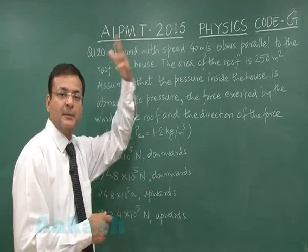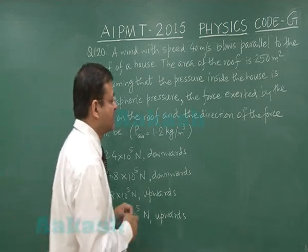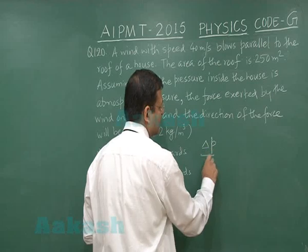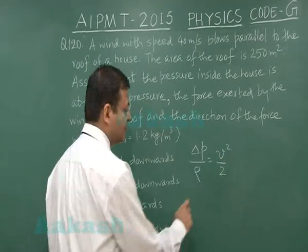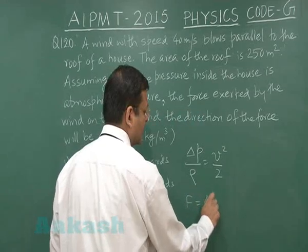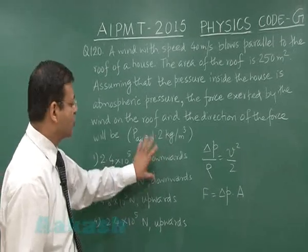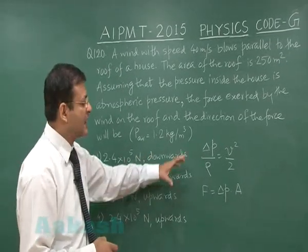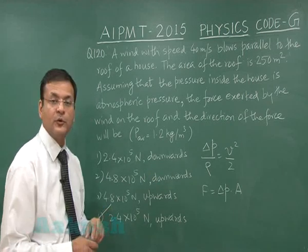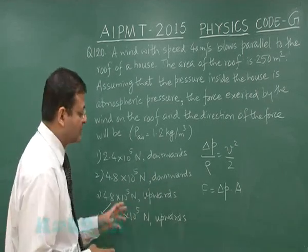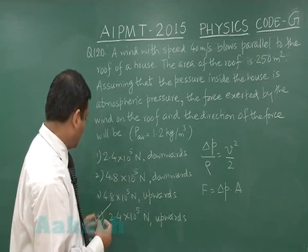On the upper side if the air is blowing, pressure will be less. Delta p by ρ, that is change in pressure upon density, will be v² by 2 as per Bernoulli's equation. Force will be simply Δp into area. Downward forces, these two options will be stricken off. If you calculate the value, the force is coming out to be 2.4 × 10⁵ Newton upward. The most appropriate answer is option 4 for question 120.